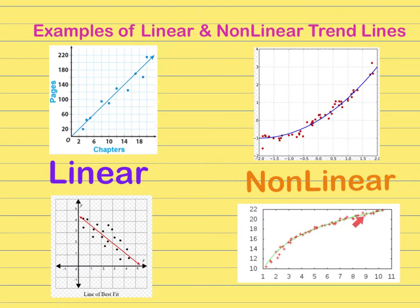The same is true for this graph on the bottom. I can't draw one straight path keeping equal amounts of points on both sides of the line, so in order for me to do that, I have to make this line bend and curve. This one also started very low and then it increased rapidly and then it started to level off and not increase as quickly again. Both of these are still trend lines, they're just non-linear.